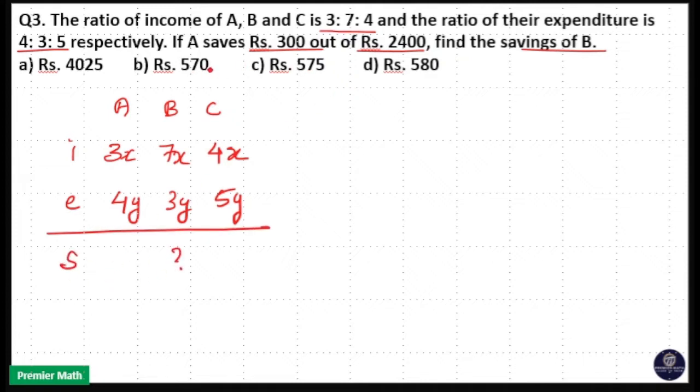Here A saves 300 out of 2400. That means A savings is 300 and the income of A is 2400. So 3x is equal to 2400. That means x is equal to 800.